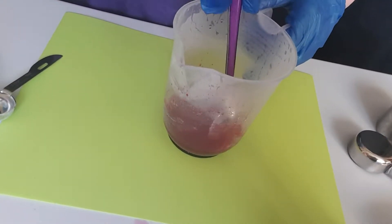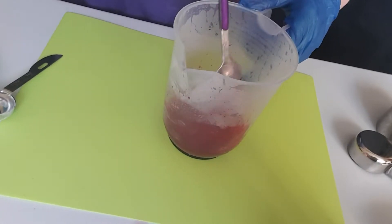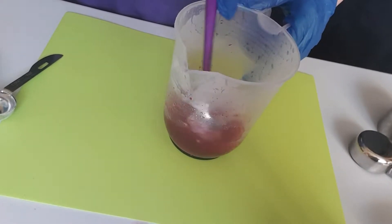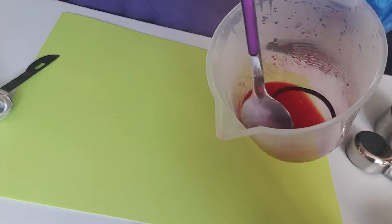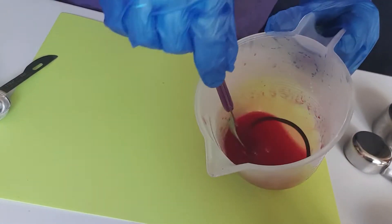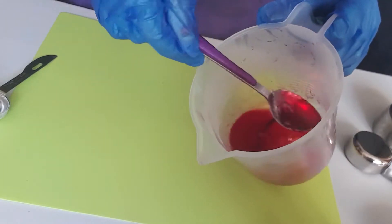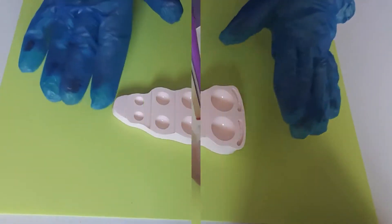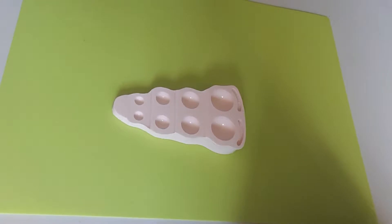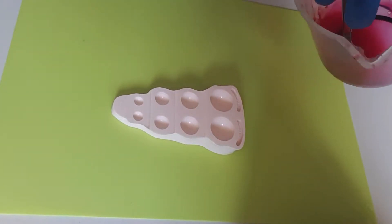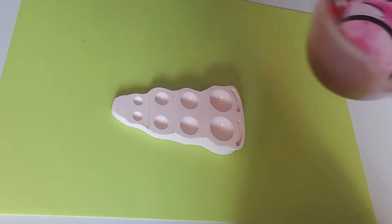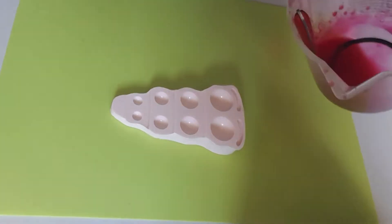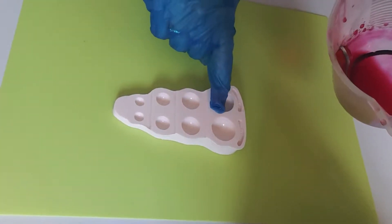Once you've got rid of all your lumps and bumps, just leave the mixture aside to cool down. It works better with the mixture slightly cooler. Here's the mold - I'll put it in the fridge for about five minutes just to cool down. The longer you leave your jelly mixture, notice it's getting quite thick now.